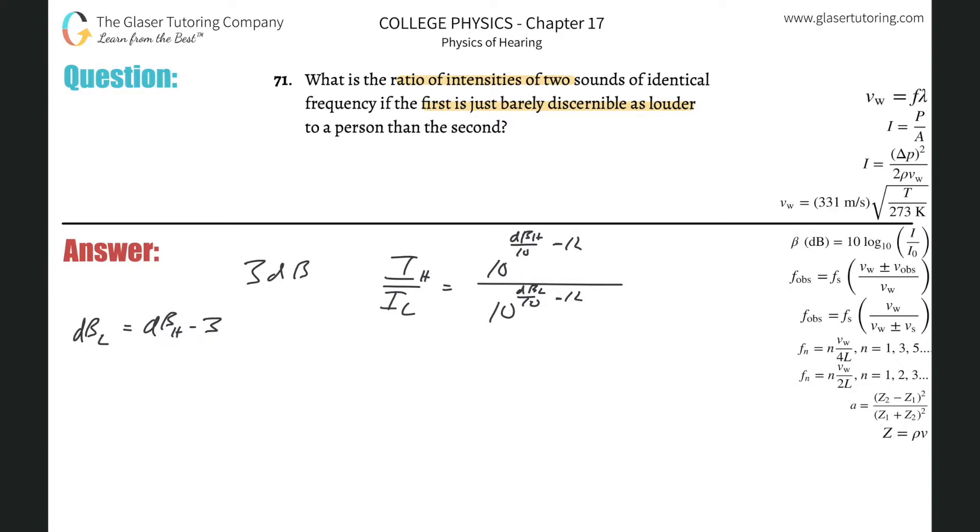So now basically what I can do is I can do a substitution. I can plug this on in for my lower decibel value. So this is the higher intensity divided by the lower intensity will basically be equal to 10 raised now to the dbh all over 10 minus 12, divided now by 10 raised to the dbh minus 3 over 10 minus 12, okay?